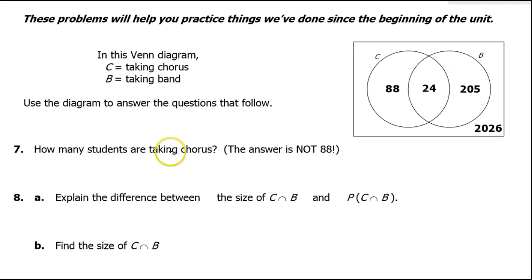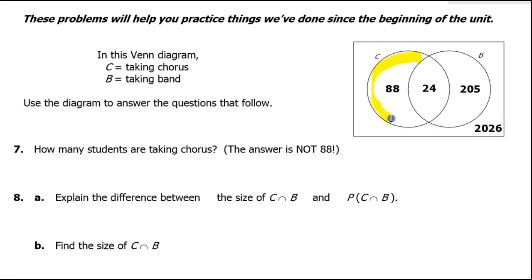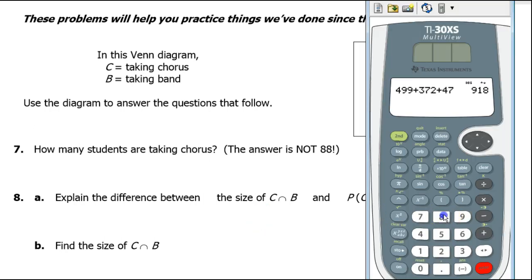How many students are taking chorus? Please be careful. A common mistake is to say 88 because it's clearly in the C section. But circle C is bigger than 88 — this whole circle is C. That includes both numbers representing people taking chorus. So we have to add them up: 88 plus 24, that's 112.